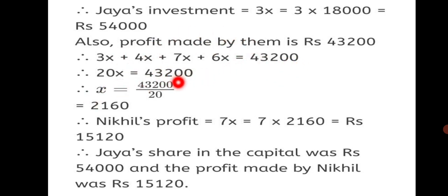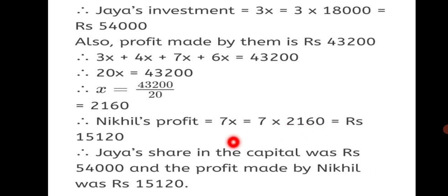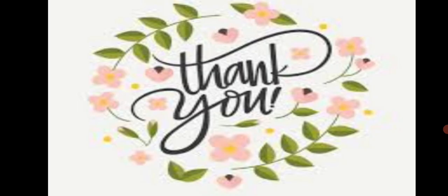x = 43,200 ÷ 20 = Rs. 2,160. In the question, we want to find Nikhil's profit which is 7x. So 7 × 2,160 = Rs. 15,120. Therefore Jaya's share in the capital was Rs. 54,000 and the profit made by Nikhil was Rs. 15,120. This way we have completed Practice Set 39. Do practice the sums well in your book. Stay safe, keep learning, and thank you.